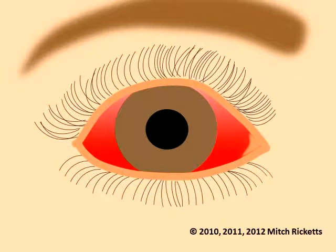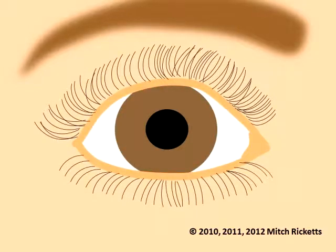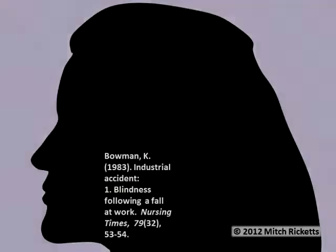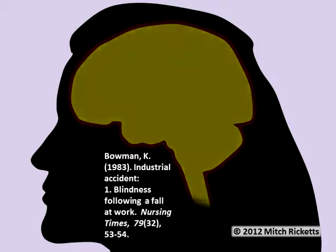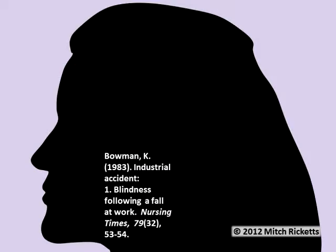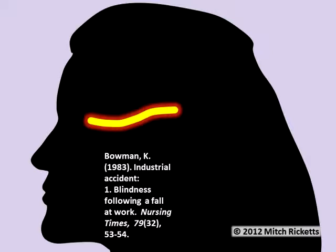Although subconjunctival hemorrhages look serious, they usually resolve on their own with no lasting effects. Sadly, the worker did suffer other more severe head injuries. The impact caused a concussion — a serious injury to the brain. In addition, the impact caused damage to her optic nerves, which send information from the eyes to the brain. This damage caused a gradual loss of vision, and within two years the worker was blind.